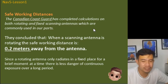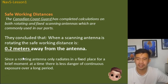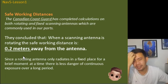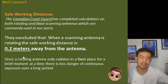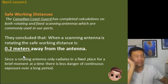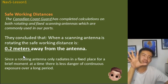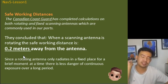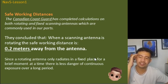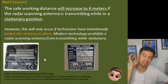Regarding safe working distance, the Canadian Coast Guard has completed calculations on both rotating and fixed scanning antennas. When a scanning antenna is rotating, the safe working distance is 0.2 meters away from the antenna. When rotating, exposure is not continuous to one direction. However, when the antenna is stationary, it continuously emits electromagnetic energy in one direction. There is less danger of continuous exposure over a long period of time for a rotating antenna compared to a stationary one.